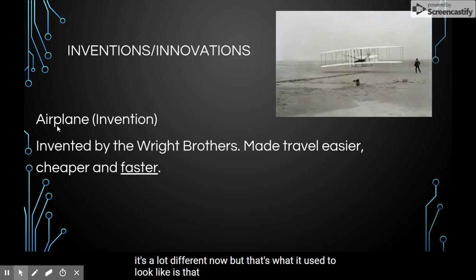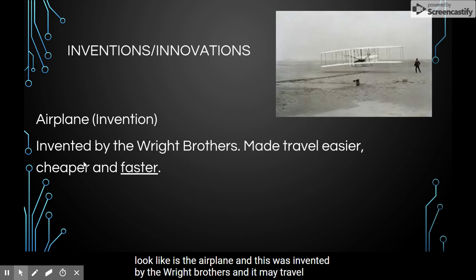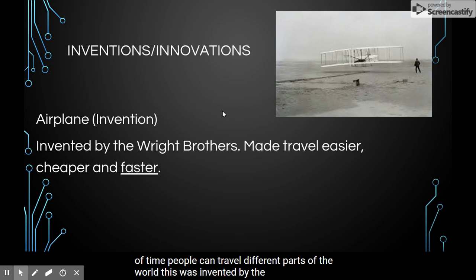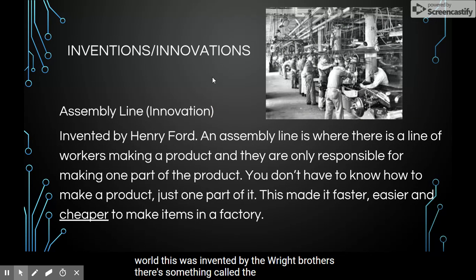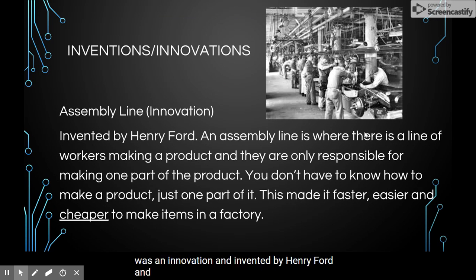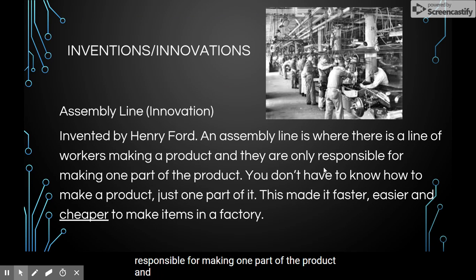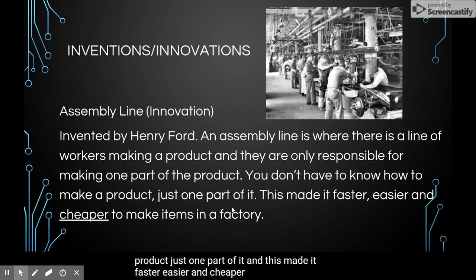Another important invention is the airplane, invented by the Wright brothers. It made travel easier, cheaper, and faster, so people can go from one part of the country to another in a short amount of time. There's also something called the assembly line, an innovation invented by Henry Ford. An assembly line is where there is a line of workers making a product, and they are only responsible for making one part of the product. You don't have to know how to make the whole product — just one part. This made it faster, easier, and cheaper to make items in a factory.